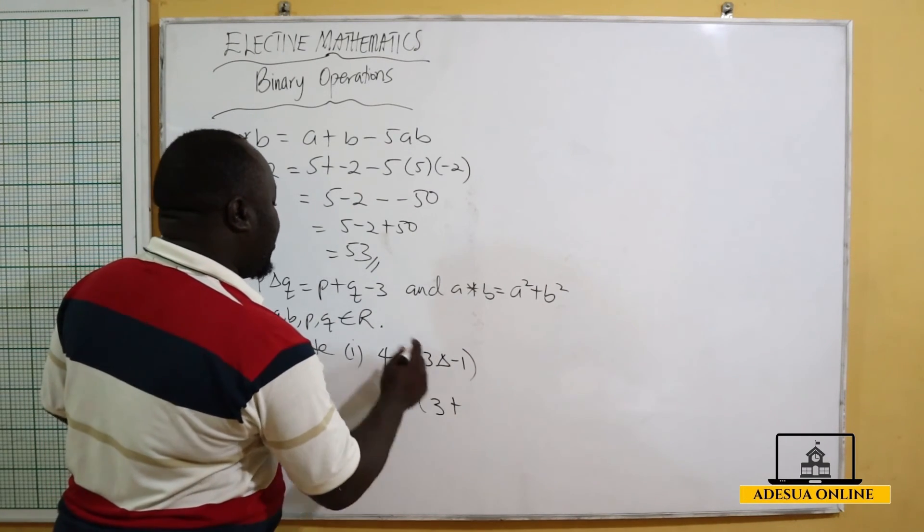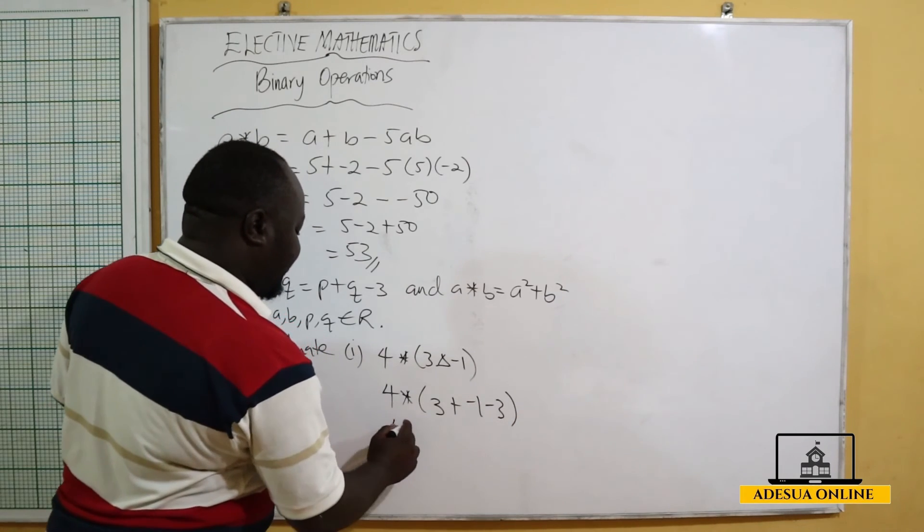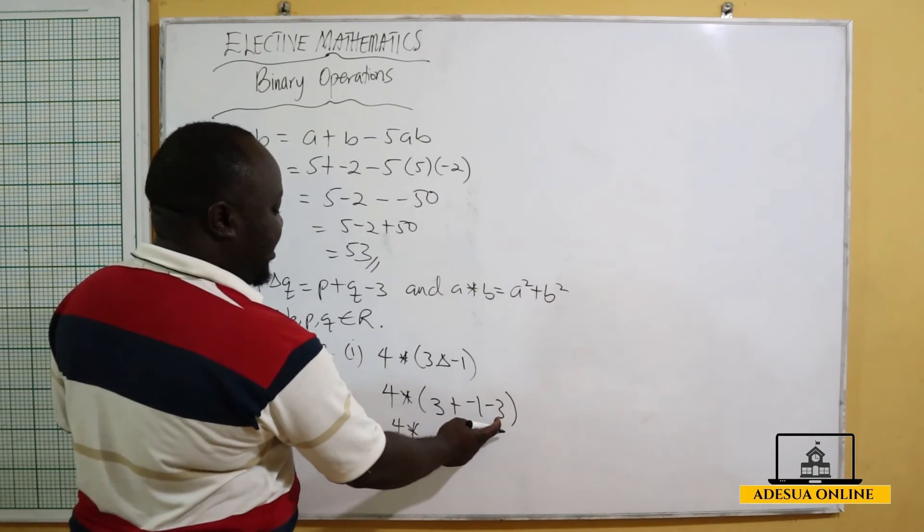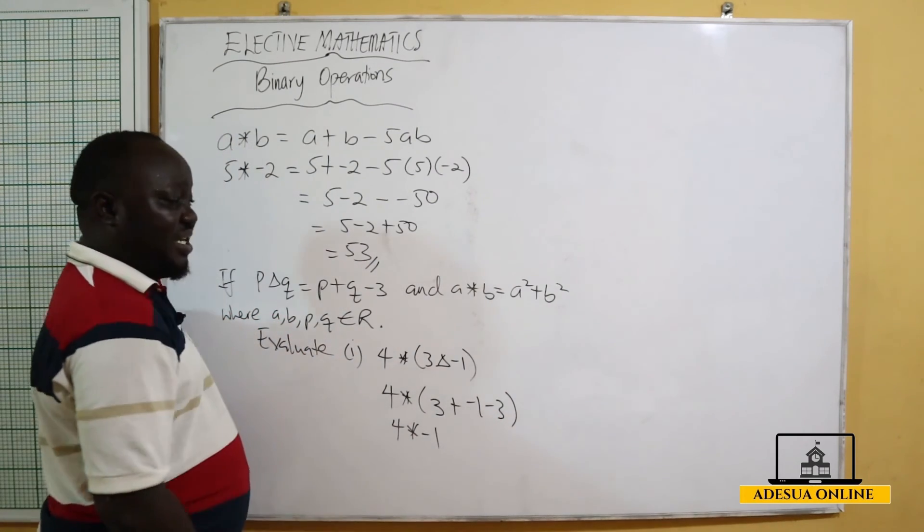So this will give me 4 star, now 3 minus 3 is zero minus 1, I have minus 1. So when I evaluate the one in the bracket I get minus 1.